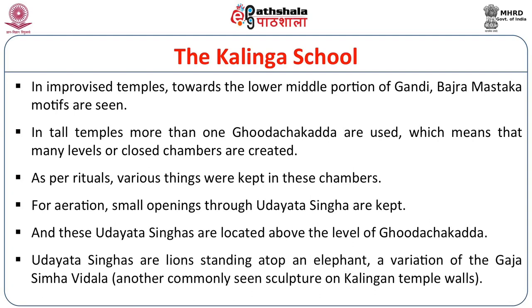Udayata Singhas are prominently visible on the Shikhara of Kalinga temples. They are a slab of stone with a lion on top, and below the lion is mostly an elephant. What they indicate is that there is an opening to a chamber in which ceremonial things are kept. They are always above the level of the Ghoda Chakkada and are a variation of the Gaja Simha Vidala or Vyala.